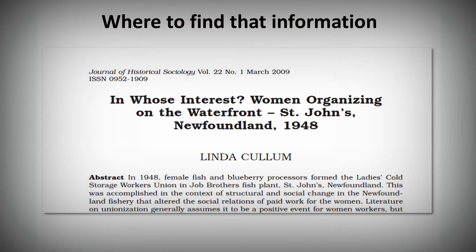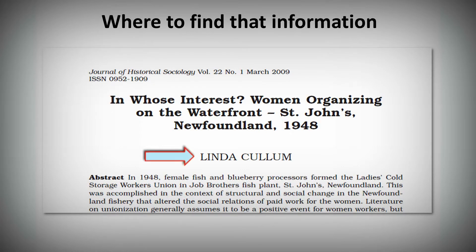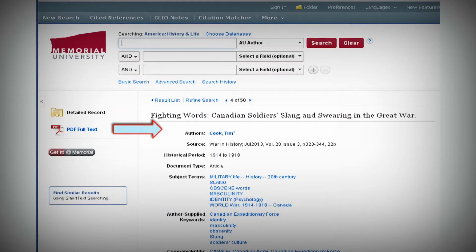But where do you find all that information? Everything you need is usually right there in the journal article. Whether you're using a print journal or a PDF of an online journal article, you can easily find the title and author. The journal name, volume, issue, and date are normally on each page as either a header or a footer. You will also find that information at the library's article index that you used to find the article.